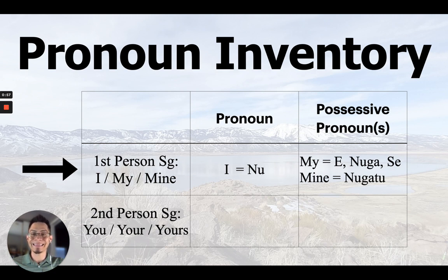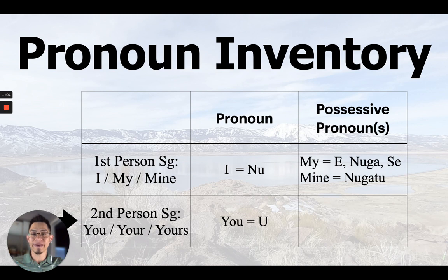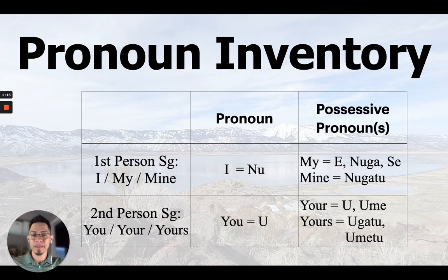Today, we're going to be looking at the second person singular. The second person singular is you, and you in Northern Paiute is U. But we're going to be looking at the possessive pronouns. For your, we have Ư and Ưmi. And for yours, you have two options: Ưgat and Ưmi't.